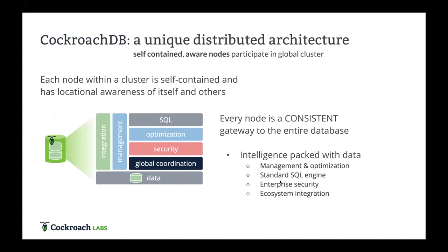CockroachDB has a unique architecture. Each instance is its own node — I could spin up an instance right now on this laptop and point it at a cluster and it will participate. Every node in the database is a consistent gateway or endpoint to the entire database. While data is stored in triplicate across multiple nodes, I can ask any node and it will know where to find the data. I could have a thousand nodes across AWS, Azure, or GCP and have one database.